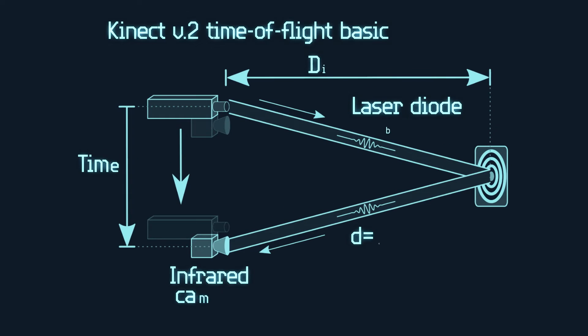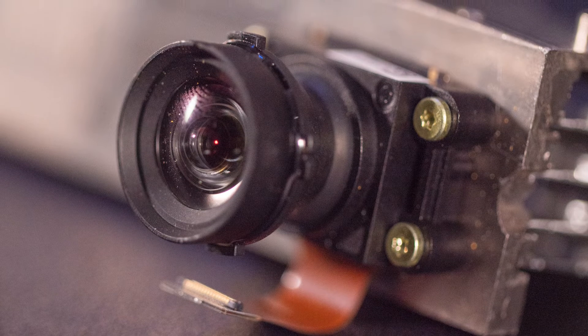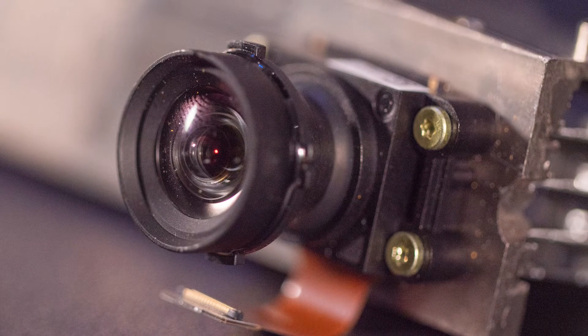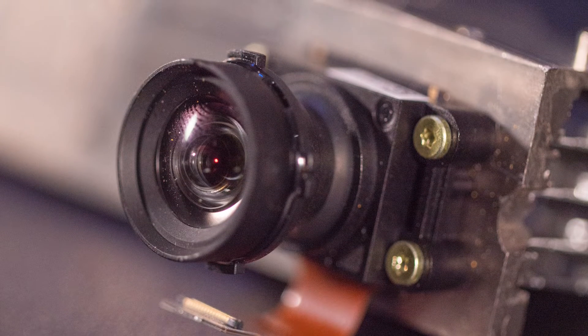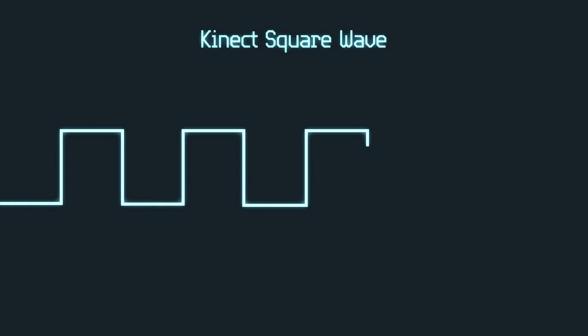It uses 3D time-of-flight techniques that illuminate the scene with a modulated infrared light source, not a speckle pattern. If you look at the Kinect version 2 laser light with an infrared camera, the difference between the version 1 and version 2 patterns become obvious. In version 2 of the Kinect, the phase shift between the infrared laser diode illumination and the reflection serves as a measure of distance and depth.